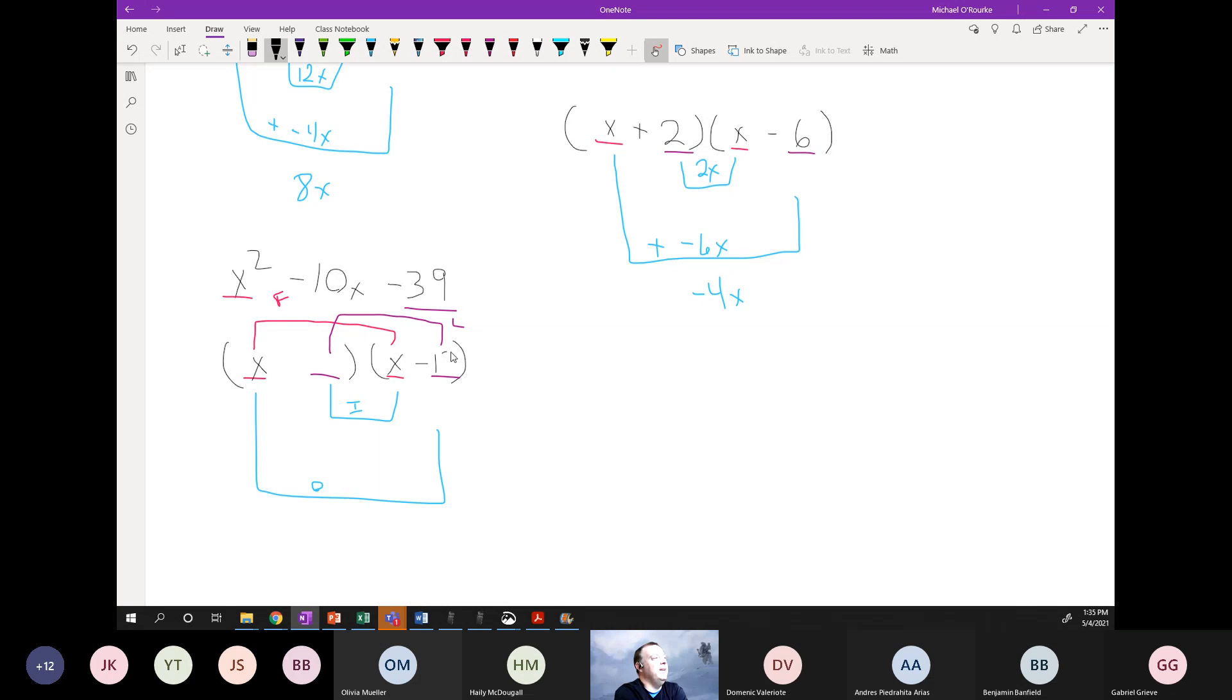So negative 13 and positive 3. So if you look here, what's happening when you have a negative sign in the middle, that means the larger number of these two is going to be negative. So 3x plus negative 13x is negative 10x. Good, we have check there.